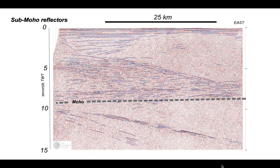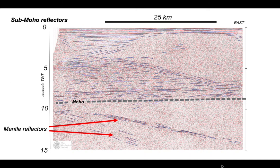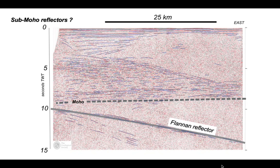Now let's turn our attention to the deeper parts of the profile. What about these sub-Moho reflectors — presumably these are in the mantle? Interpreting these is pretty tricky. This could be due to aligned minerals, or more plausibly these mantle reflectors represent compositional variations within the mantle. What these compositional variations might be is a matter of significant debate. Nevertheless, we can still map out these mantle reflectors. The lower ones are a little discontinuous, but the top one is a really important seismic event that has been named the Flannan reflector.